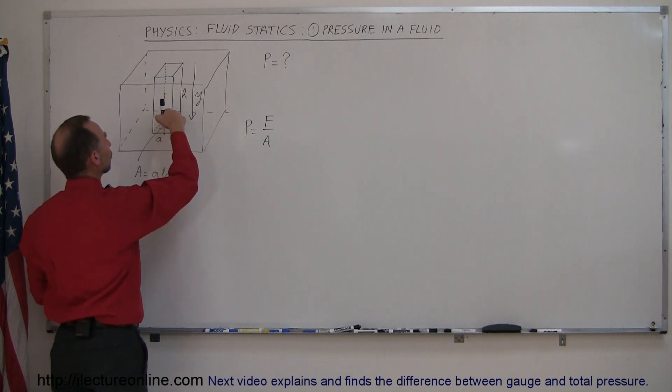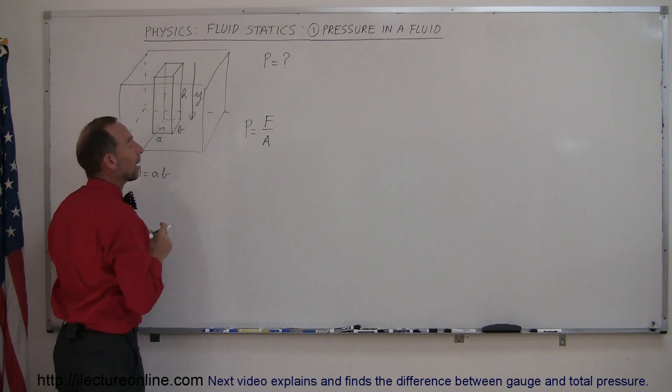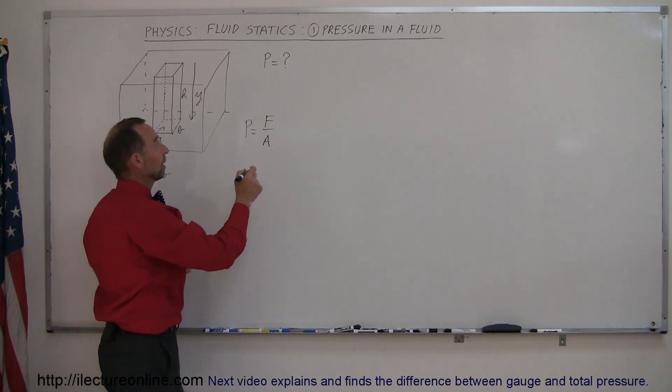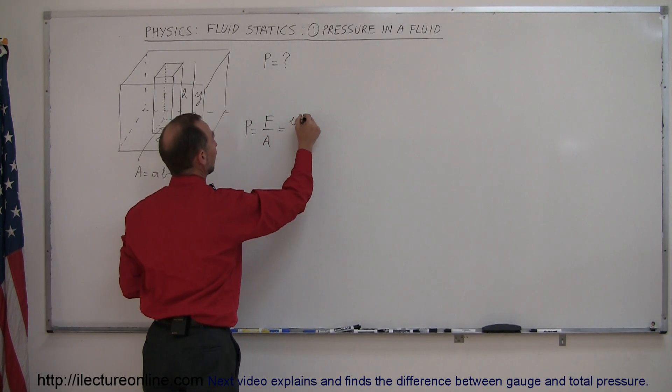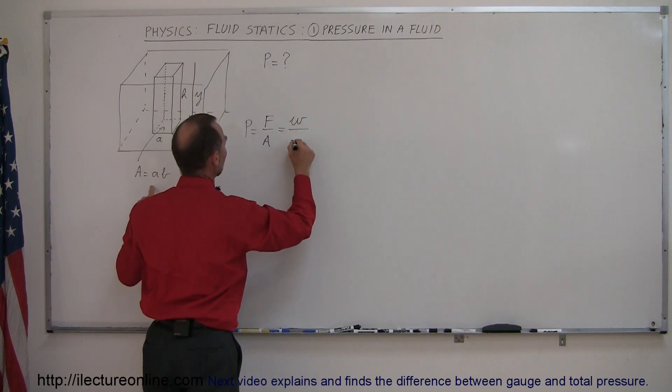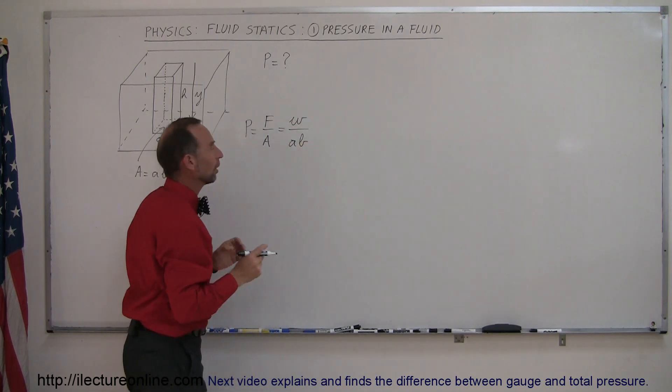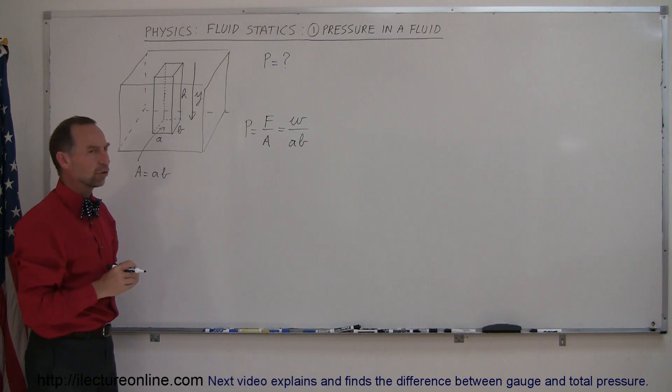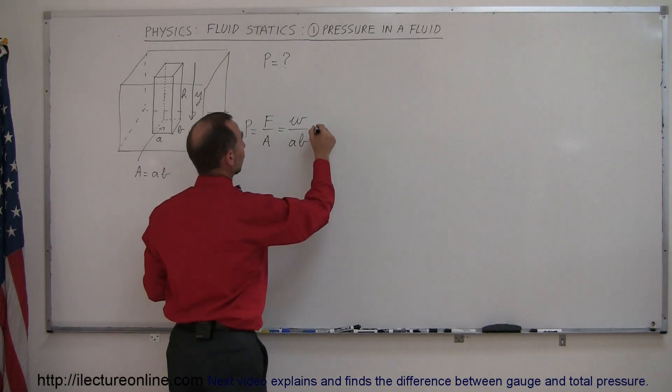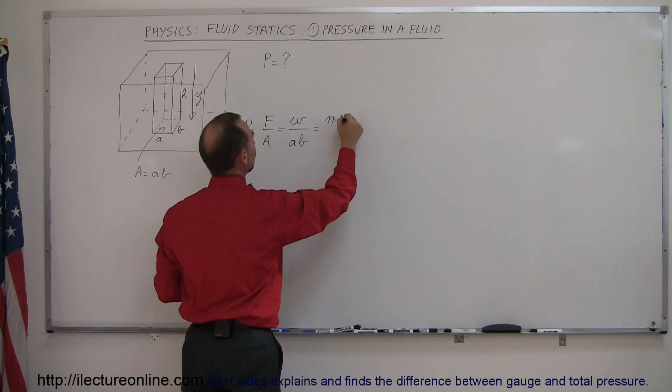And the force would simply be the weight of the water column on top of the bottom of the pool. So force is equal to the weight, and the area is equal to the product of the two sides at the bottom of that water column. And of course the weight of the water is equal to the mass times the acceleration due to gravity. So this can be written as mg divided by A times B.